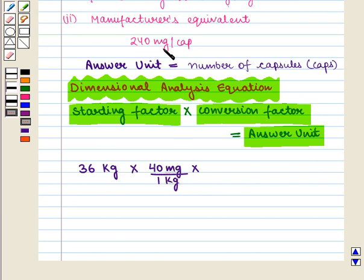The next conversion factor is 240 mg per capsule, which we can also write as 1 capsule upon 240 mg. This equals the answer unit in capsules.